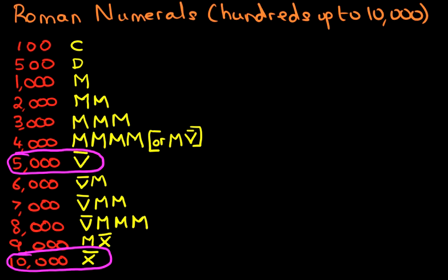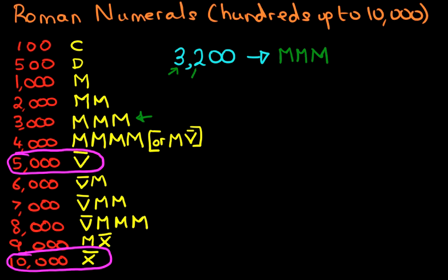Now that we know the thousands and how to write one hundred and five hundred, let's write a few Roman numerals down. Suppose we have three thousand two hundred — how would we write that in Roman numerals? First we write down the three thousand, which is three M's. Then we write the two hundred, which is C, C. So three thousand two hundred is M, M, M, C, C.